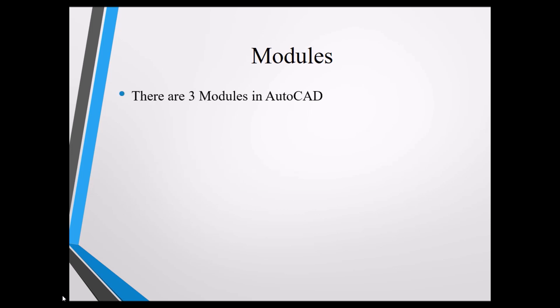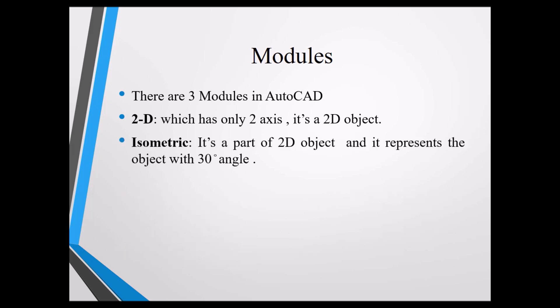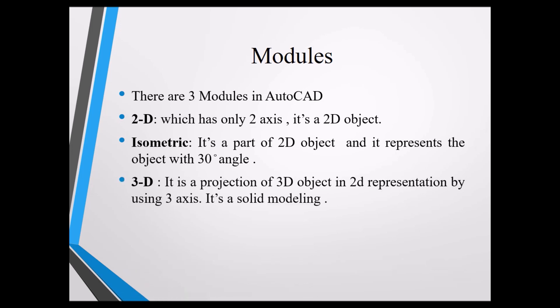AutoCAD has three types of modules. First is 2D, where we draw only 2D sketches using the X and Y axes. Second is Isometric, which is a part of 2D and represents objects at a 30-degree angle. Third is 3D, which is a projection of a 3D object in 2D representation using three axes — it is a complete solid modeling object.